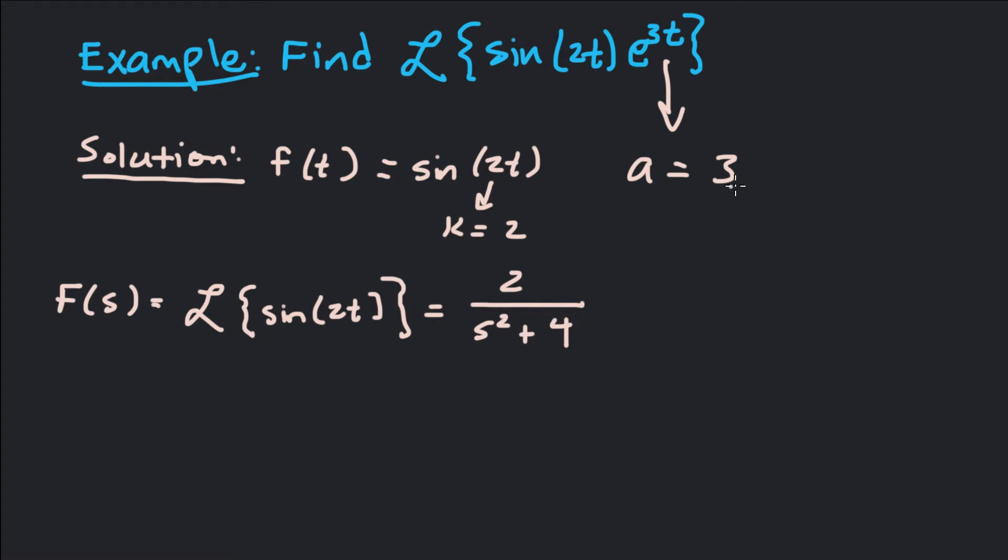So now what we're going to do is we're going to take the first translation theorem and say okay, that's going to shift to s minus 3. So F of s minus 3 is going to be Laplace transform of sine of 2t e to the 3t. So that's going to be F of s minus 3.